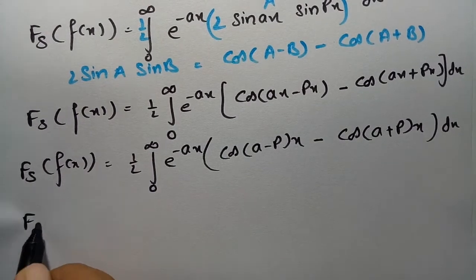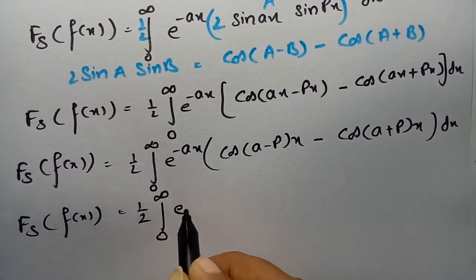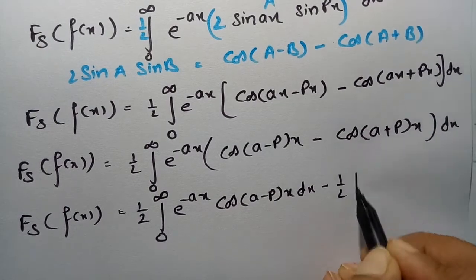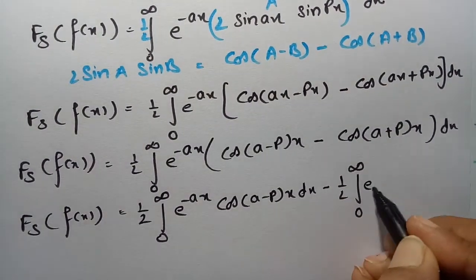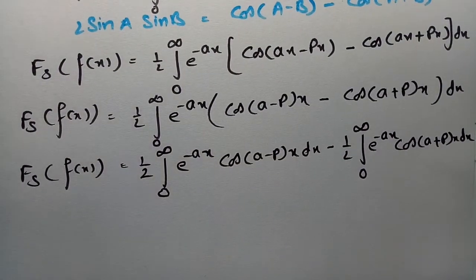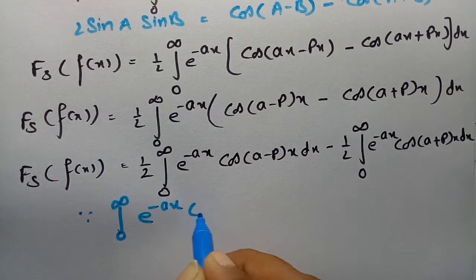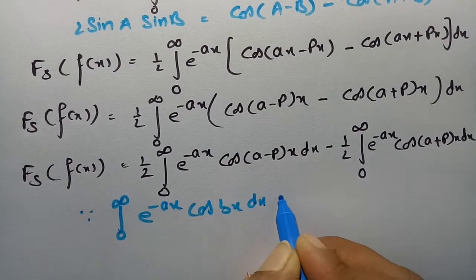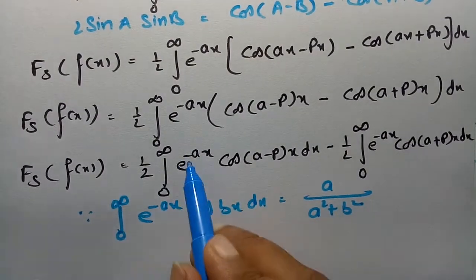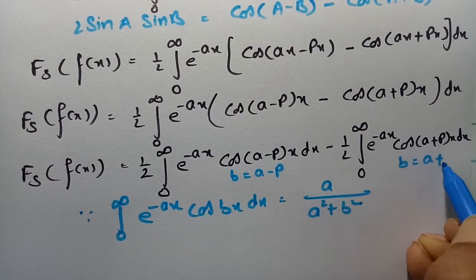So the Fourier sine transform of f(x) equals one half times the integral from 0 to infinity of e^(-ax) · [cos((a - p)x) - cos((a + p)x)] dx. We use the standard formula: integral from 0 to infinity of e^(-ax) · cos(bx) dx = a / (a² + b²). Here b = (a - p) in the first term and b = (a + p) in the second.